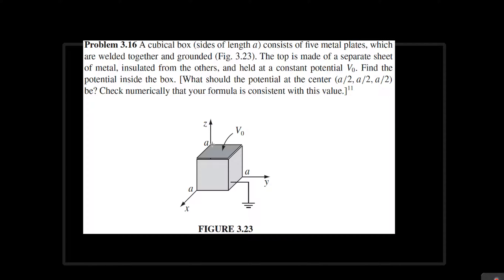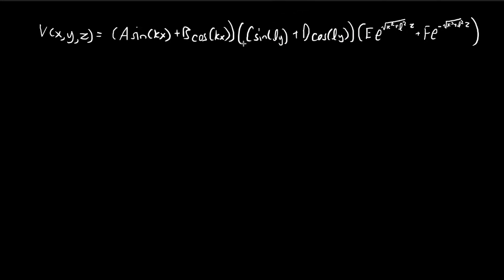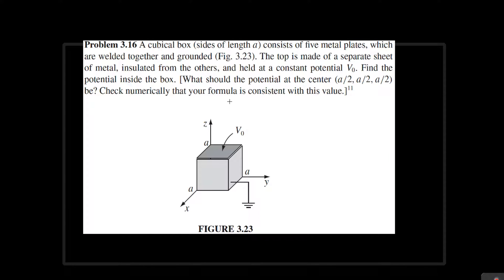We have a setup that is a cube where five of its sides are all grounded — they all have potential zero — and the top plate has a potential of V₀. We're trying to find the potential inside the cube. Using separation of variables, our answer has to look something like a known form. We won't prove this here; there's a good example in the book. The next step is to find the constants — L, C, and so on — using the boundary conditions.